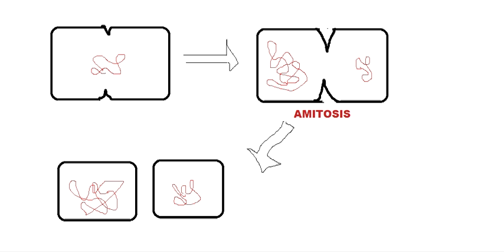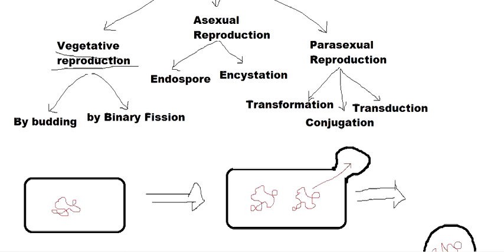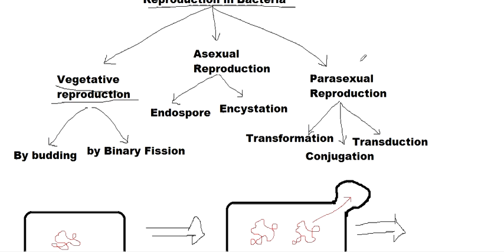That was in a nutshell the vegetative reproduction in bacteria. Thanks for watching. In the next videos we will discuss each of these processes — the more important ones which have more to talk about — so we will talk about transformation in one video, then conjugation, then transduction, and at last asexual reproduction. Thanks for watching again, bye.